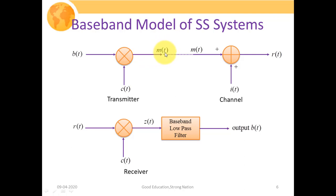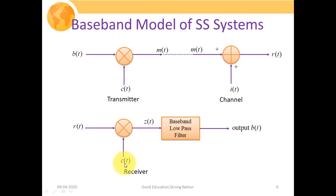The message signal M(t) passes through the channel where noise-like interference adds to and distorts the signal. The distorted received signal R(t) is the input to the receiver, which must retrieve the original bit sequence B(t). At the receiver, R(t) is again multiplied with the same chipping sequence C(t) used at the transmitter. The product Z(t), when passed through a baseband low-pass filter, generates the output B(t).